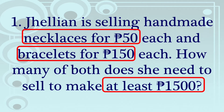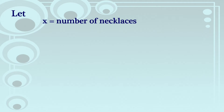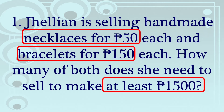So based sa ating problem, si Jillian ay gumagawa ng necklaces at bracelets — binibenta niya bawat isang necklace sa halagang 50 pesos at bracelets sa halagang 150 pesos. Dahil meron tayong dalawang given — necklaces and bracelets — i-represent natin sila as X and Y. So we let X be the number of necklaces and Y be the number of bracelets.